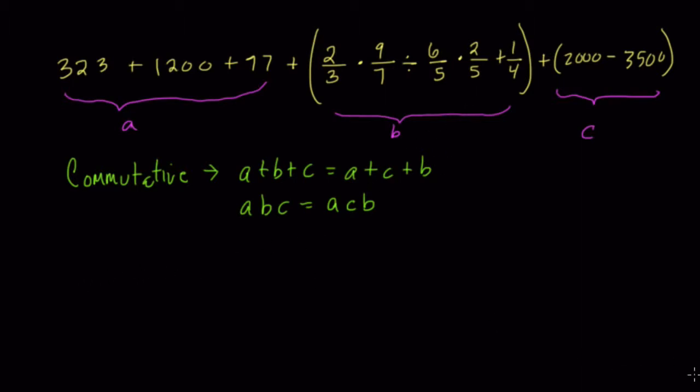And that brings out the next property. Once we move these, we want to change the way we associate them. So I have A first, 323 plus 1,200 plus 77, and then plus the C term, 2,000 minus 3,500. That's A and C, so I'll label that again, A and C.